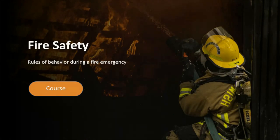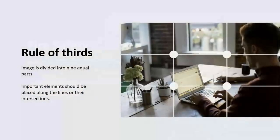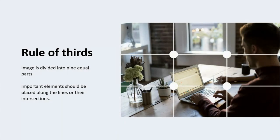Now let's speak about the second rule: the Rule of Thirds. This rule is based on the perception of the human eye. The image should be imagined as divided into nine equal parts by two equally spaced horizontal lines and two equally spaced vertical lines, and important compositional elements must be placed along these lines or at the intersections. In PowerPoint, there is a feature called Grid Lines found on the View tab — enabling it lets you see the image divided into these parts.